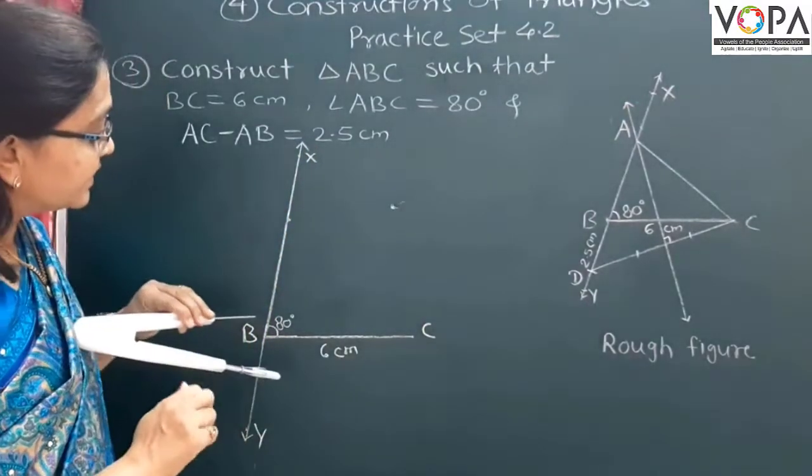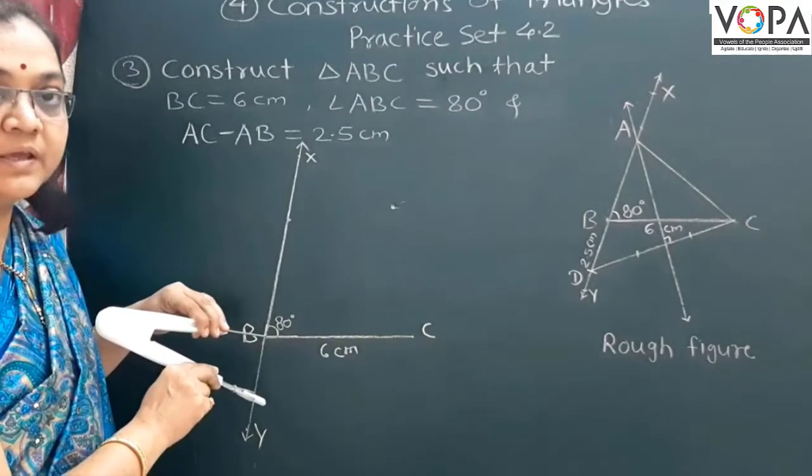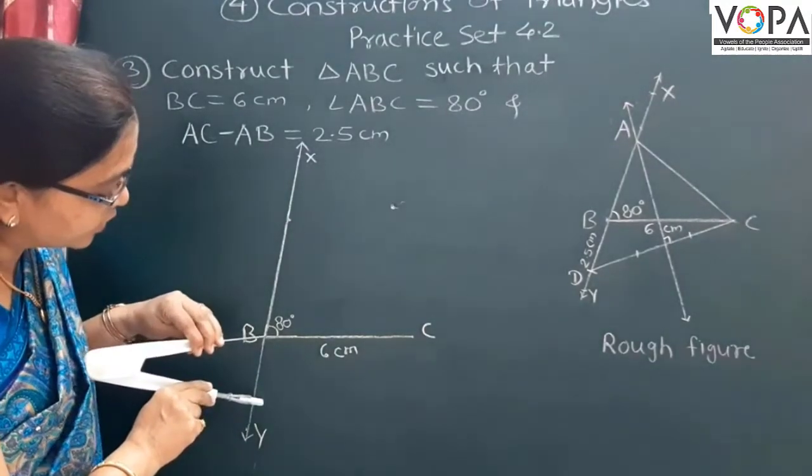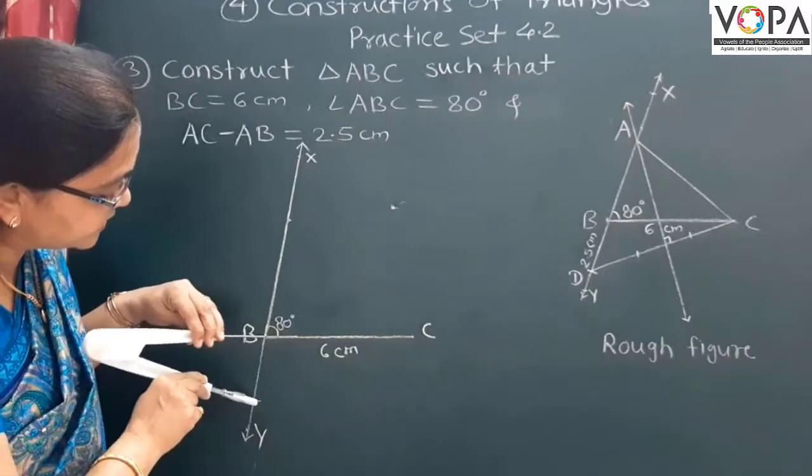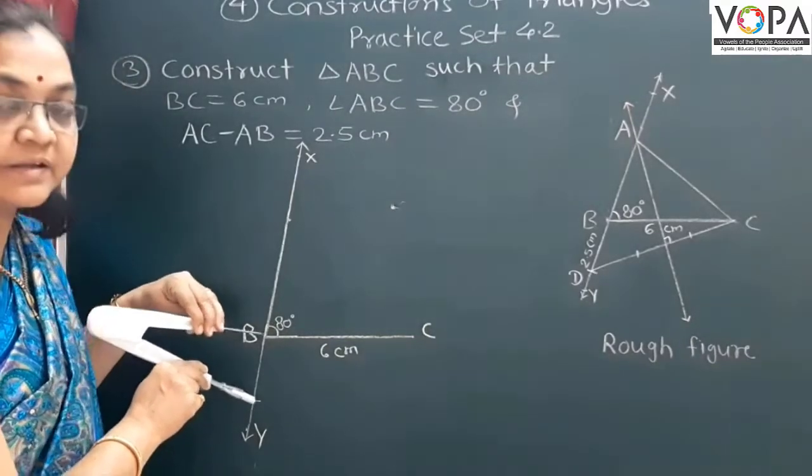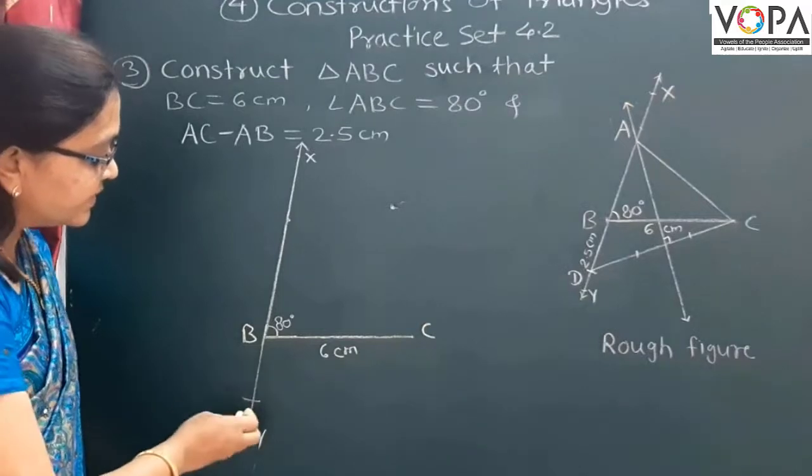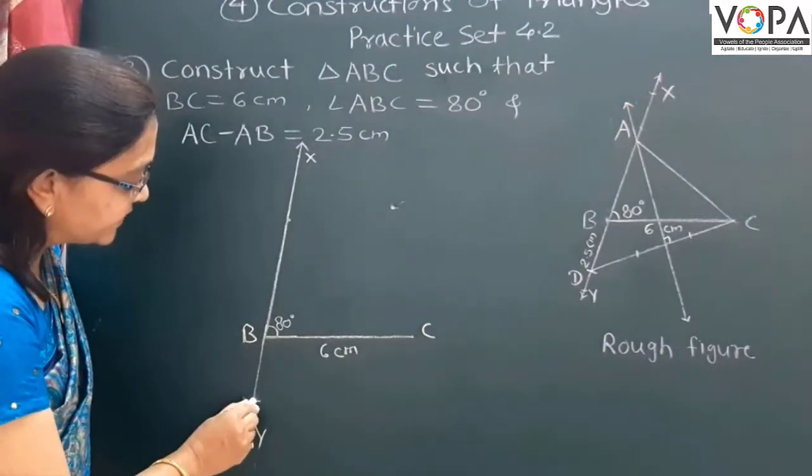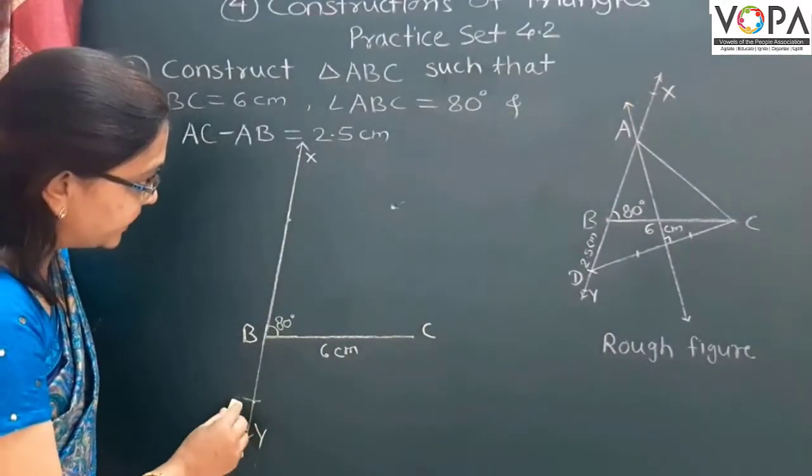Then, take B as a center. Draw one arc which intersects that ray BY. It intersects at this point. This is point D.